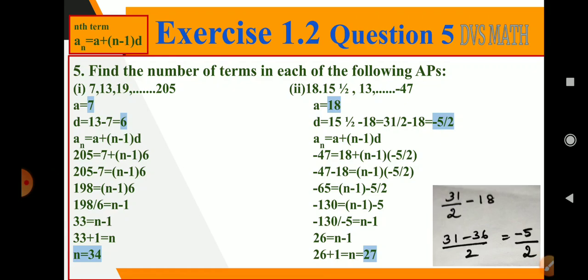If you observe here, a is 7, so the first term is 7. d is, if we subtract 13 minus 7, we'll get 6. So an is, let us write the formula: an equals a plus n minus 1 into d.